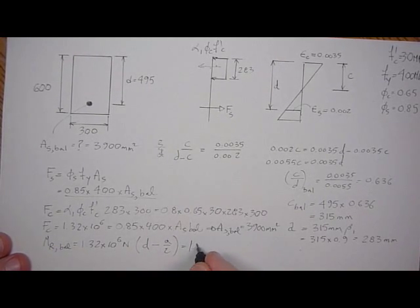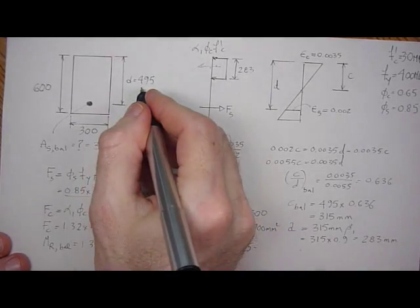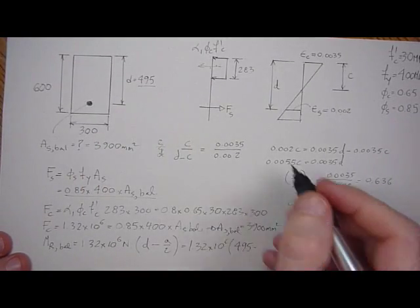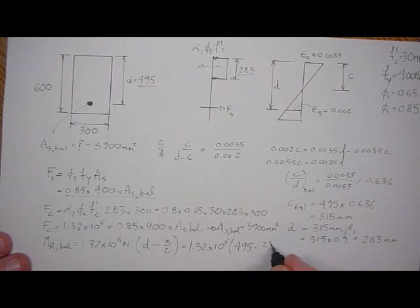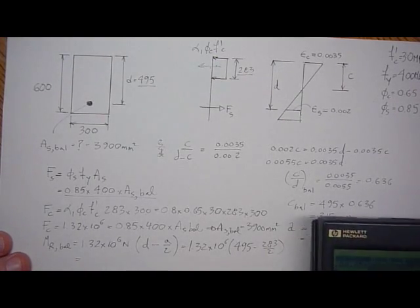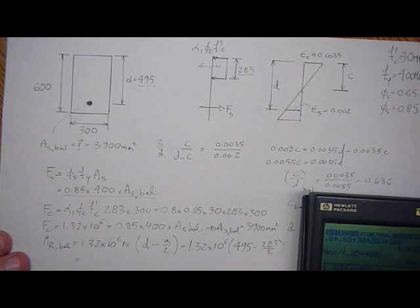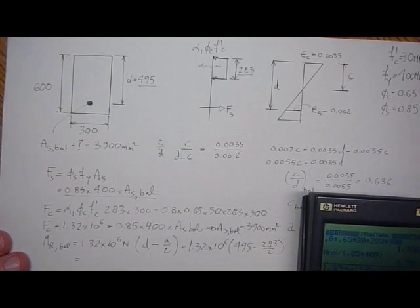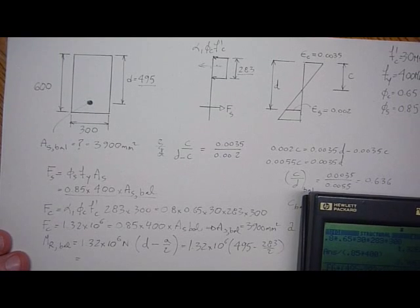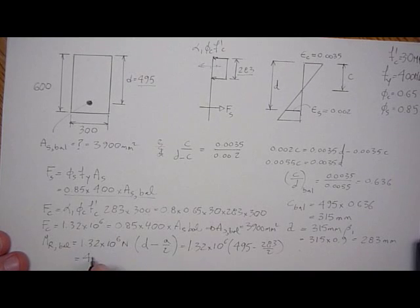So the moment resistance balance is going to equal 1.32 times 10 to the 6 times 495 for the depth, minus 283 over 2, divided by 1,000 squared to get the kilonewton meters. That's going to be 467 kilonewton meters.